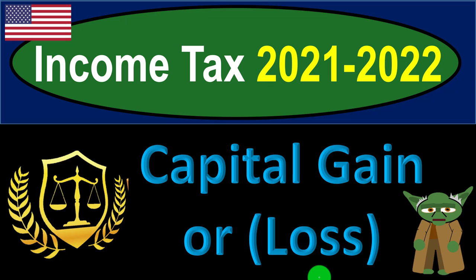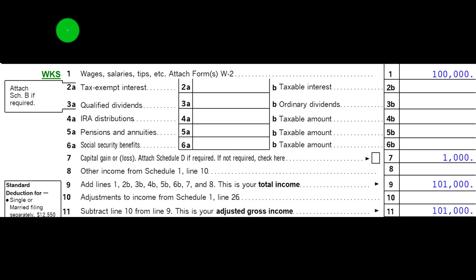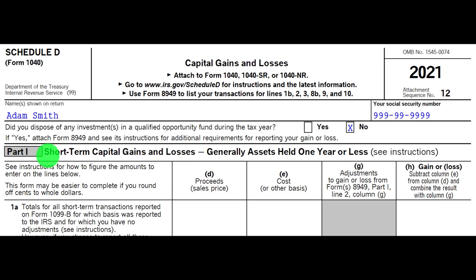Welcome to Income Tax 2021-2022 Capital Gain or Loss — get ready to get refunds to the max. We're diving into the Income Tax Formula, Line 1 Income on the first page of Form 1040, and specifically Line 7: Capital Gain or Loss. You attach Schedule D if required. This is the first part or top portion of Schedule D.